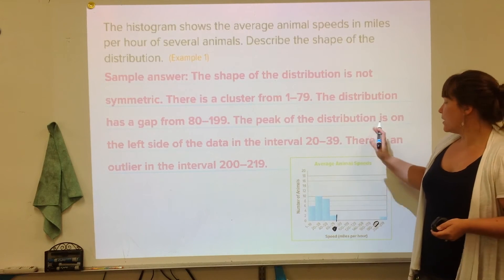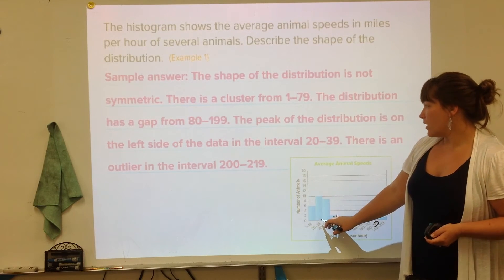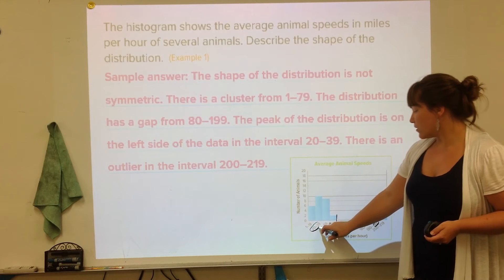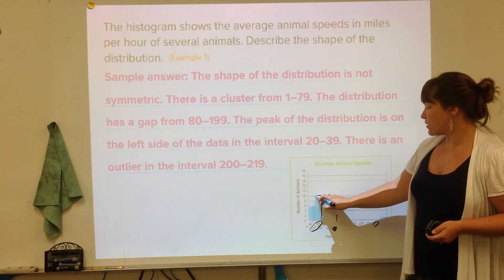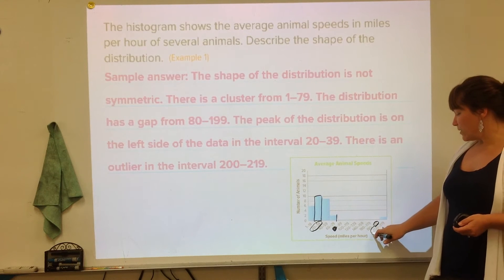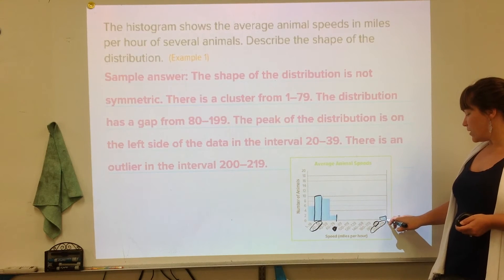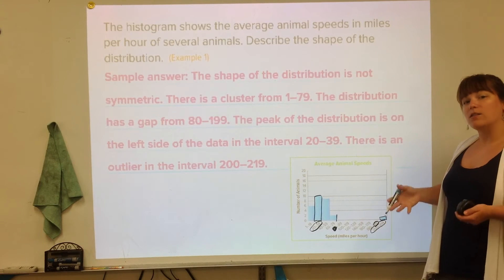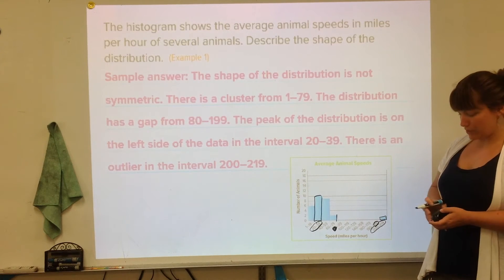The peak, the highest, is on the left side at the interval 20 to 39. So that's this part of the histogram. And then there is an outlier, and then you have to say what interval it actually is at to be more specific. That's another example for you.